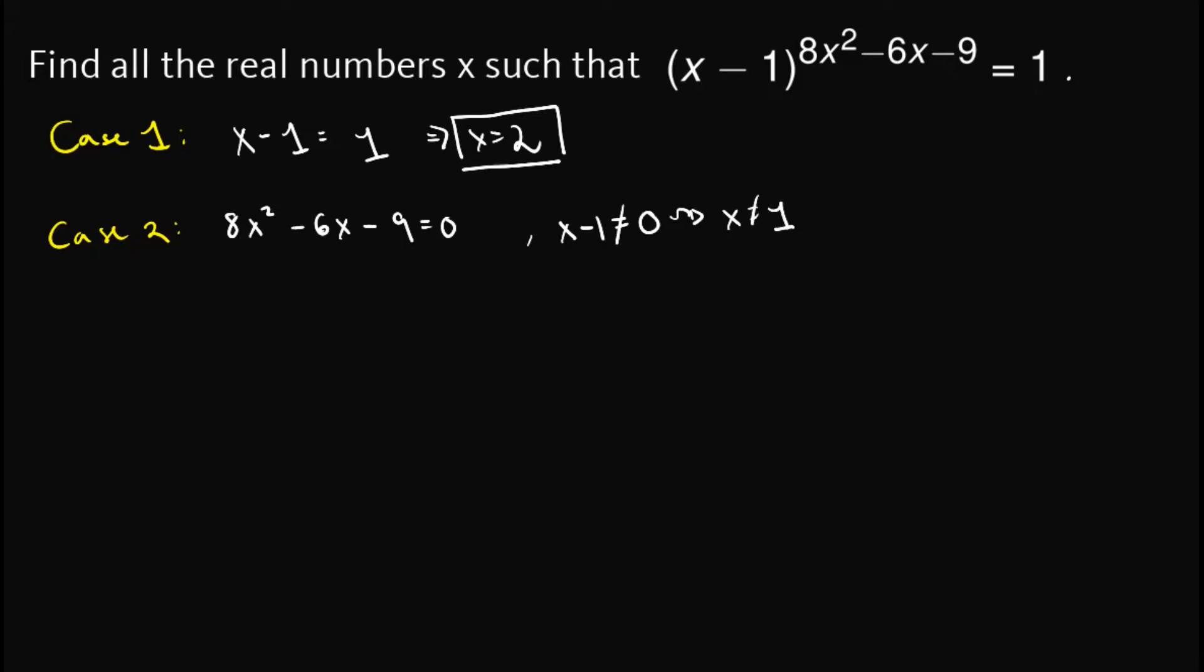So continuing, note that we can factor this one as 4x plus 3 times 2x minus 3. You can verify that one by multiplying these binomials back again. So this implies that either 4x plus 3 is equal to 0 or 2x minus 3 is equal to 0.